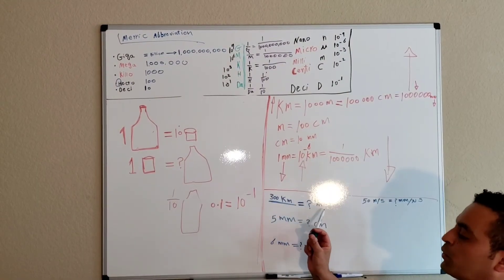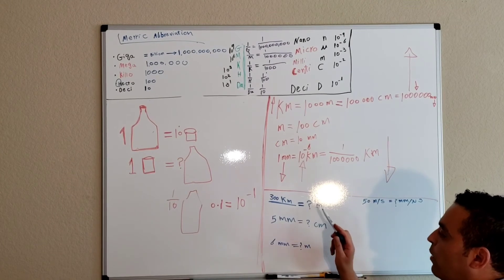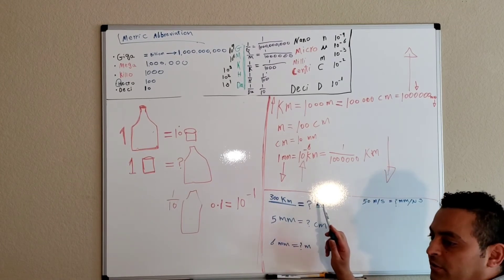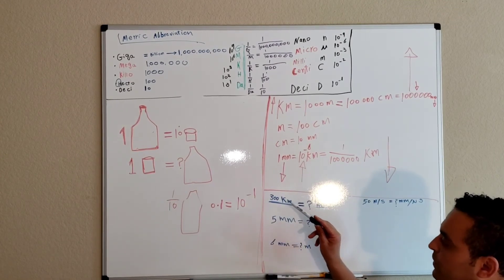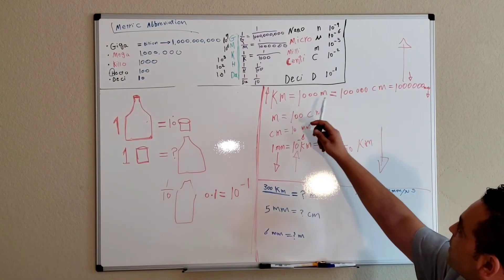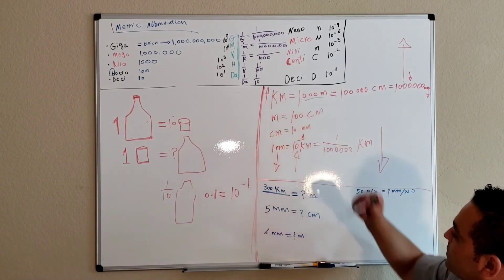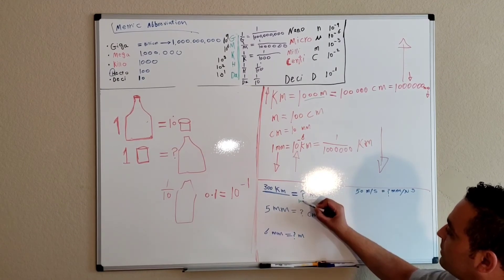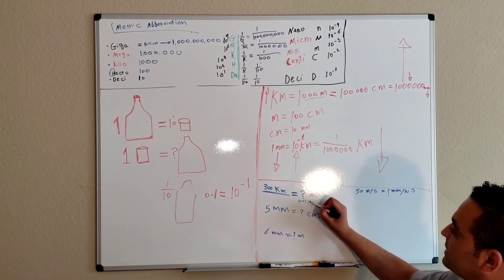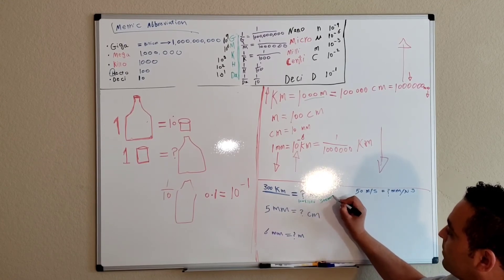If we have 300 kilometers and need to convert to meters: one kilometer equals one thousand meters, so 300 times 1000 equals 300,000 meters.